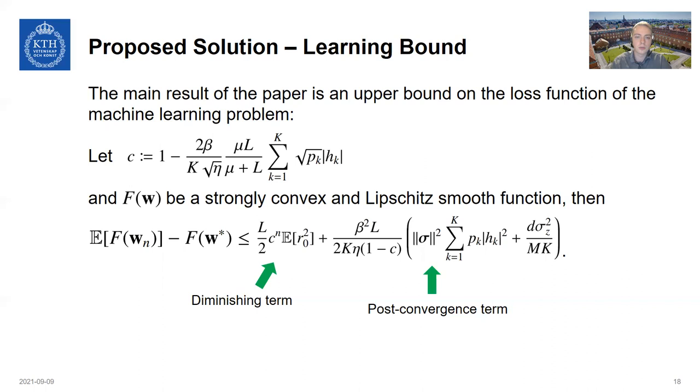And by taking a look at the power control solution that we saw, the closed form power control, you can actually prove that this C, so the convergence constant, gets smaller with increasing retransmissions. So the convergence rate per communication round is always going to go down as additional retransmissions are introduced. Additionally, we see a direct dependence on M in this post convergence term, so the noise induced error is going to go down as well.